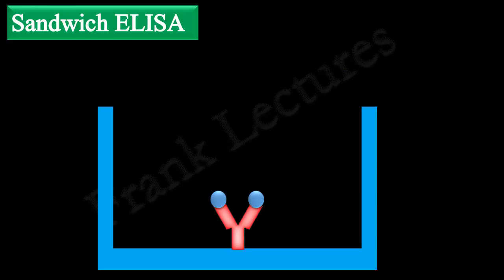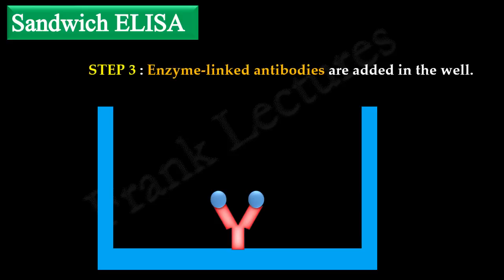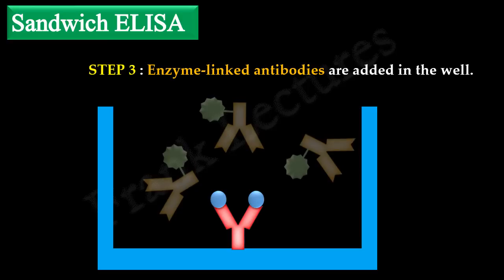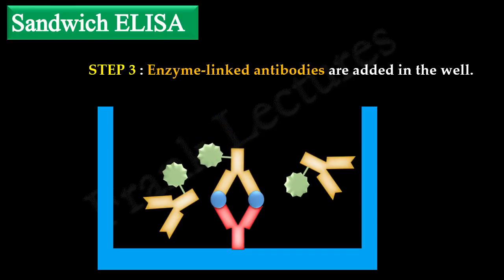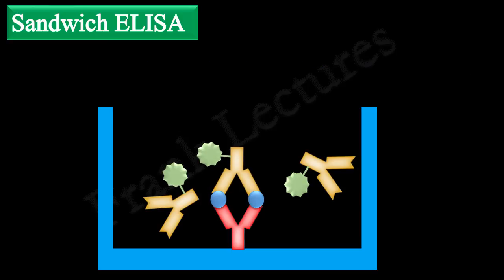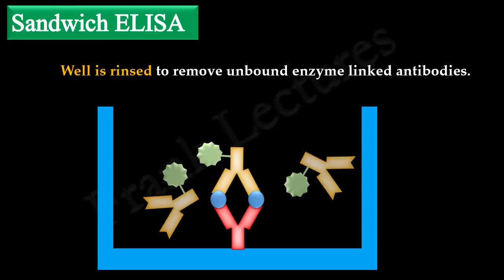In the third step, an enzyme-linked antibody is added to the well. The enzyme-linked antibody binds to the antigen. Recall that these antibodies bind to epitopes different from those bound by the capture antibody. After some time, the well is rinsed to remove unbound enzyme-linked antibodies.